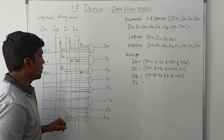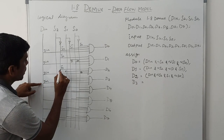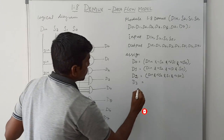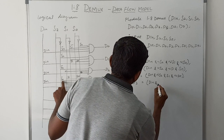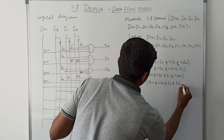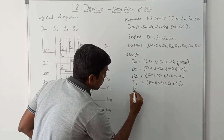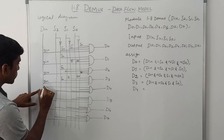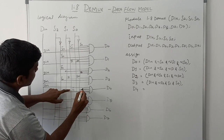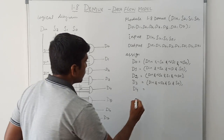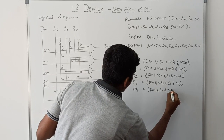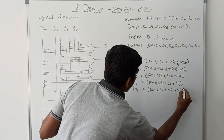Next output function D4: inputs are DIN, S2, not-S1, not-S0. Write: D4 = DIN & S2 & (~S1) & (~S0). Then D5: inputs are DIN, S2, not-S1, S0. Function is: D5 = DIN & S2 & (~S1) & S0.